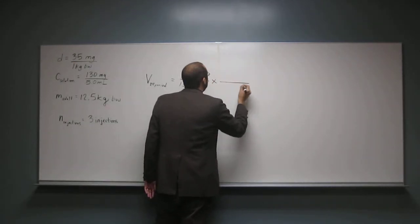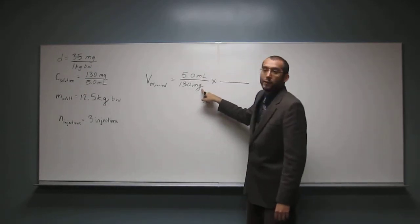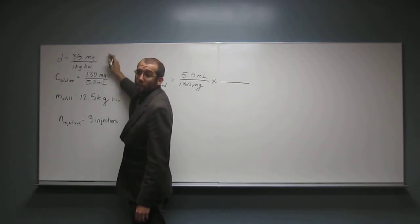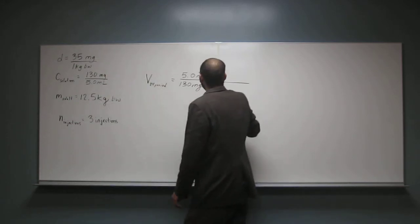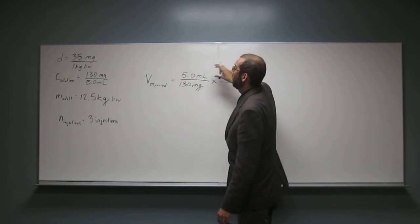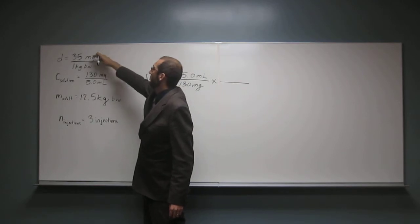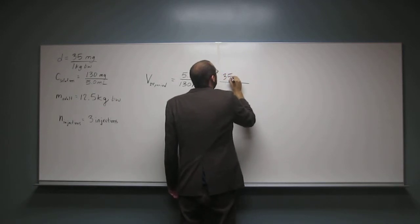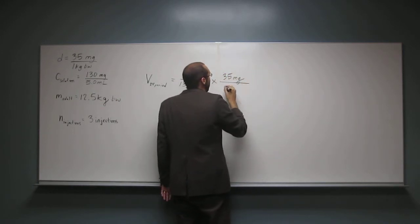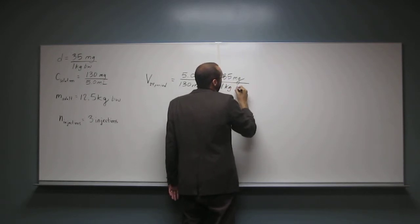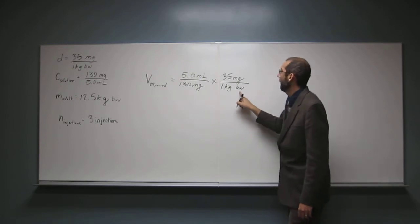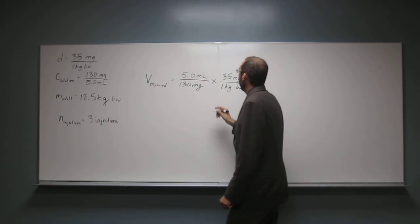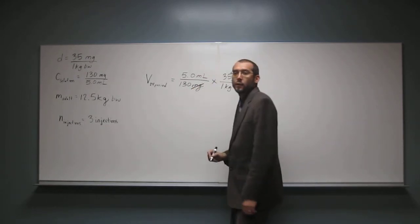Now we're going to multiply that by something else. We want to cancel out milligrams. Is there anything up here that has milligrams in it? The top one up there. And we want the milligrams to be up here, so we're just going to write it how it is here. 35 milligrams, and this is of the drug, per one kilogram of body weight. I put that body weight there so milligrams and kilograms wouldn't be confused. So now look what I can do. Milligrams cancels out with milligrams.